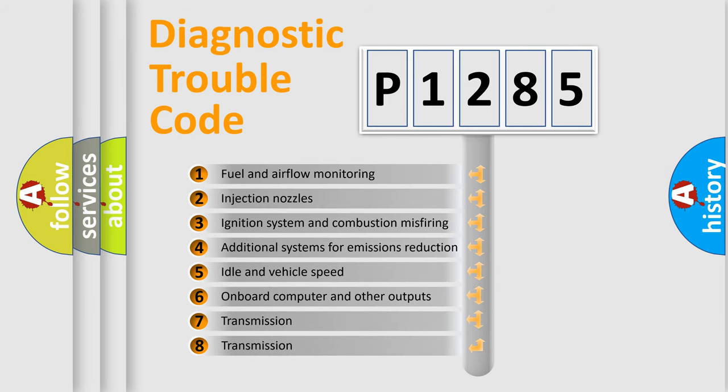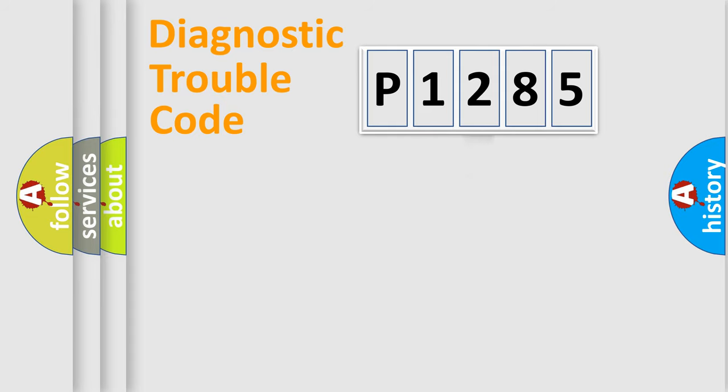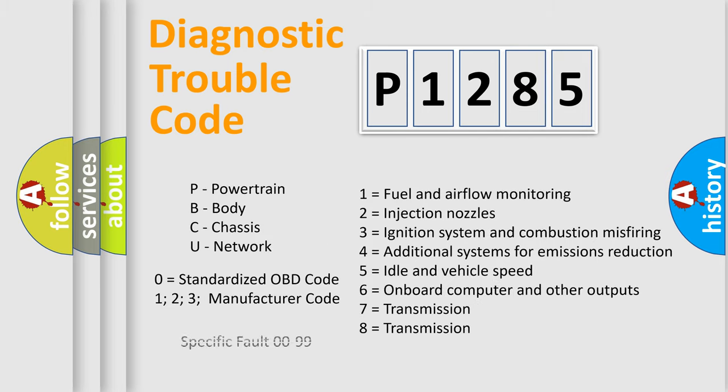The third character specifies a subset of errors. The distribution shown is valid only for the standardized DTC code. Only the last two characters define the specific fault of the group. Let's not forget that such a division is valid only if the other character code is expressed by the number zero.